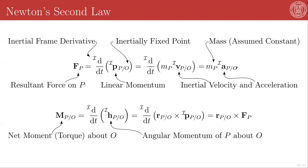All reference frames moving with respect to one another at constant velocity are mutually inertial. Any two frames that are mutually rotating with one another — even if they're not accelerating in translation — have to be accelerating because of the mutual acceleration of their unit vectors. So if one rotating frame is inertial, the other cannot be inertial.